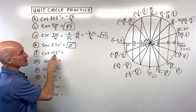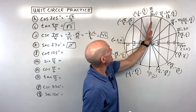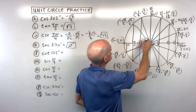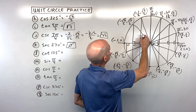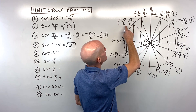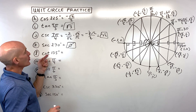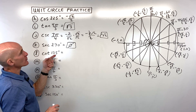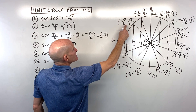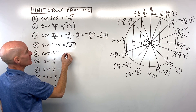Letter L: cotangent of 135 degrees. 135 is 90 plus 45 more, landing in the second quadrant. The reference angle is 45 degrees, giving coordinates negative √2/2, √2/2. Cotangent is x over y. Both have the same magnitude (√2/2), but a negative divided by a positive gives negative 1.